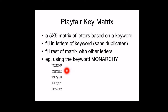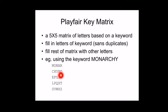For example, A is already present in the keyword, so you start with B. Check whether C is available in the keyword — yes, so omit it. Check D — not in the keyword, so place D in the next cell. Continue like this to complete the entire 5x5 matrix, placing I and J in a single cell.